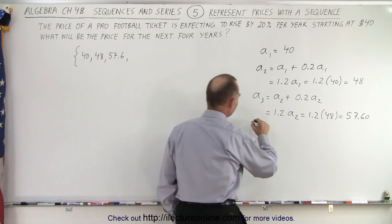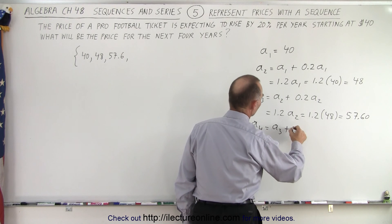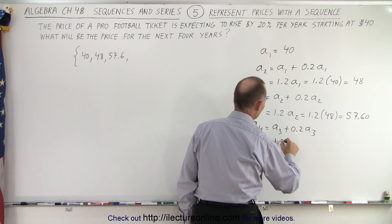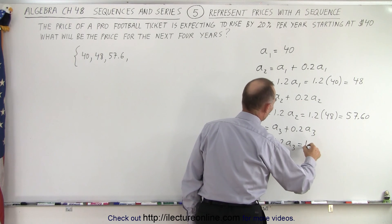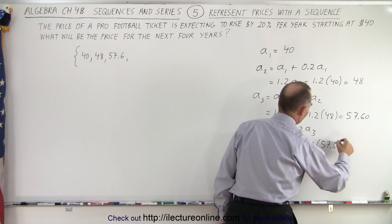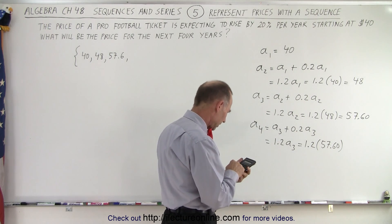How about the next one? A₄. Well, that's equal to a₃ plus 20% more of a₃, or that's equal to 1.2 times a₃, or 1.2 times 57.60. All right, now I'm going to grab a calculator, things get a little bit more complicated.